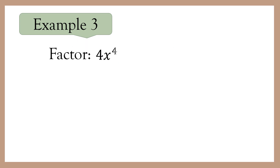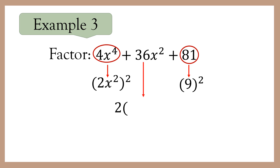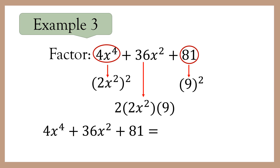Example 3: factor 4x to the fourth power plus 36x squared plus 81. 4x to the fourth power and 81 are both perfect squares, since 4x to the fourth power is the square of 2x squared and 81 is the square of 9. The middle term 36x squared should be 2 times 2x squared times 9: 2 times 2x squared is 4x squared, times 9 is 36x squared. So the factor of 4x to the fourth power plus 36x squared plus 81 is 2x squared plus 9, quantity squared.